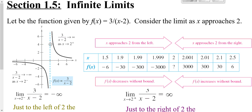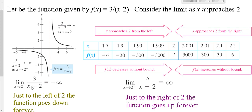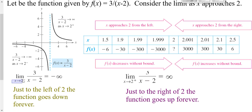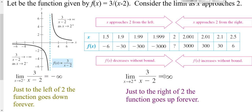You can see that looking at your graph. Just to the right of 2, you can see your graph goes up forever. Just to the left of 2, you can see your graph goes down forever. So we would say the left-hand limit — notice the little negative exponent on the 2 — of your function 3 over (x minus 2) is negative infinity, because it goes down forever. To the right, it goes up forever.